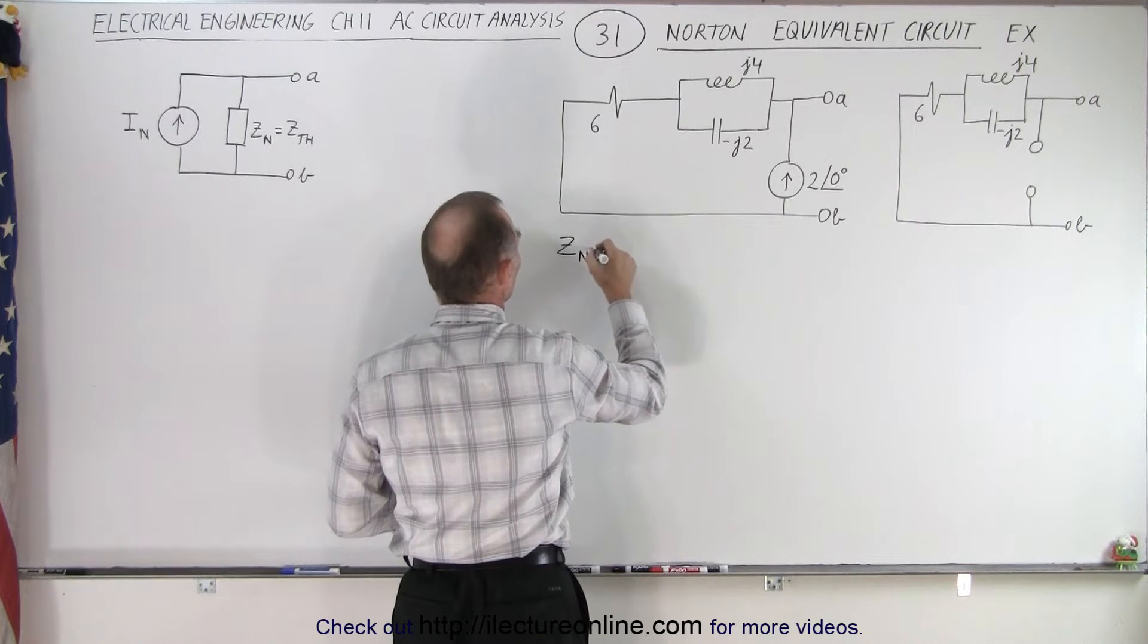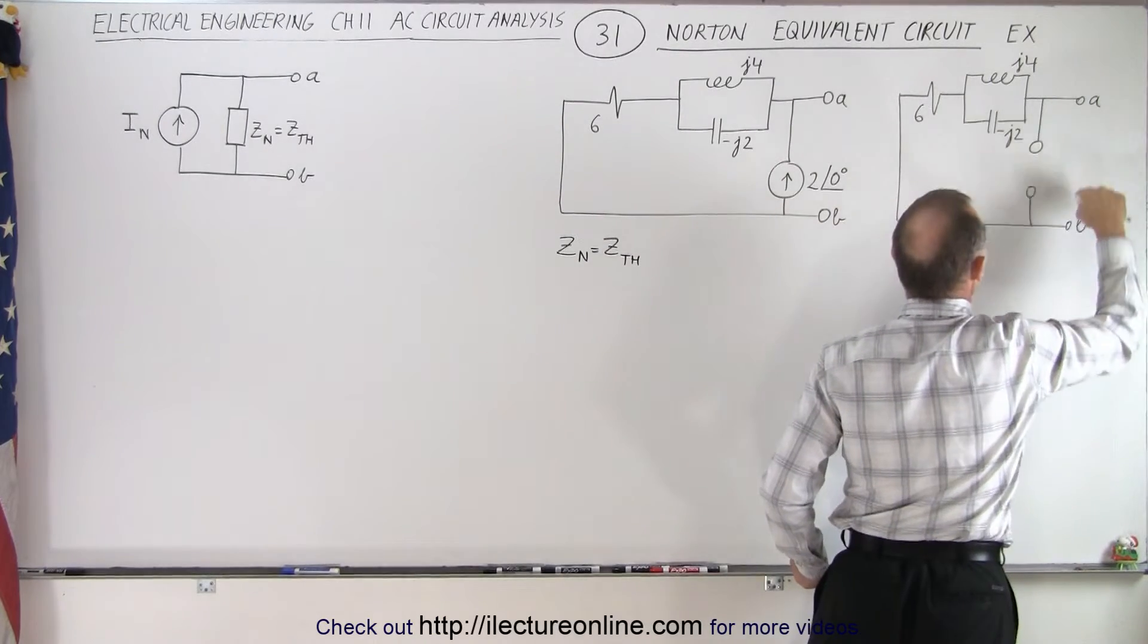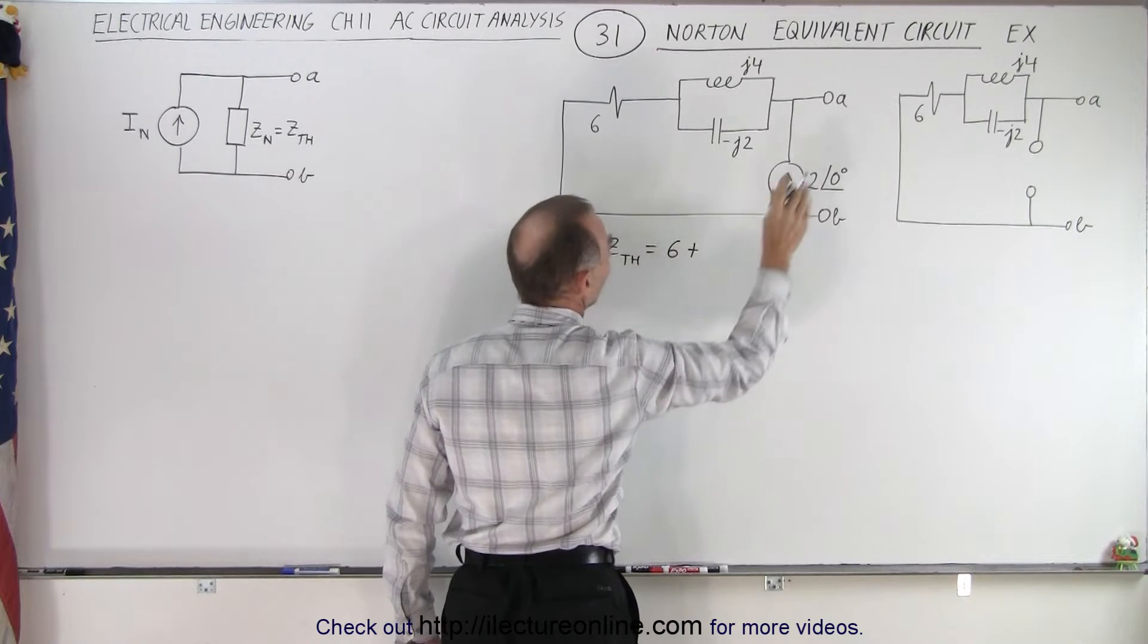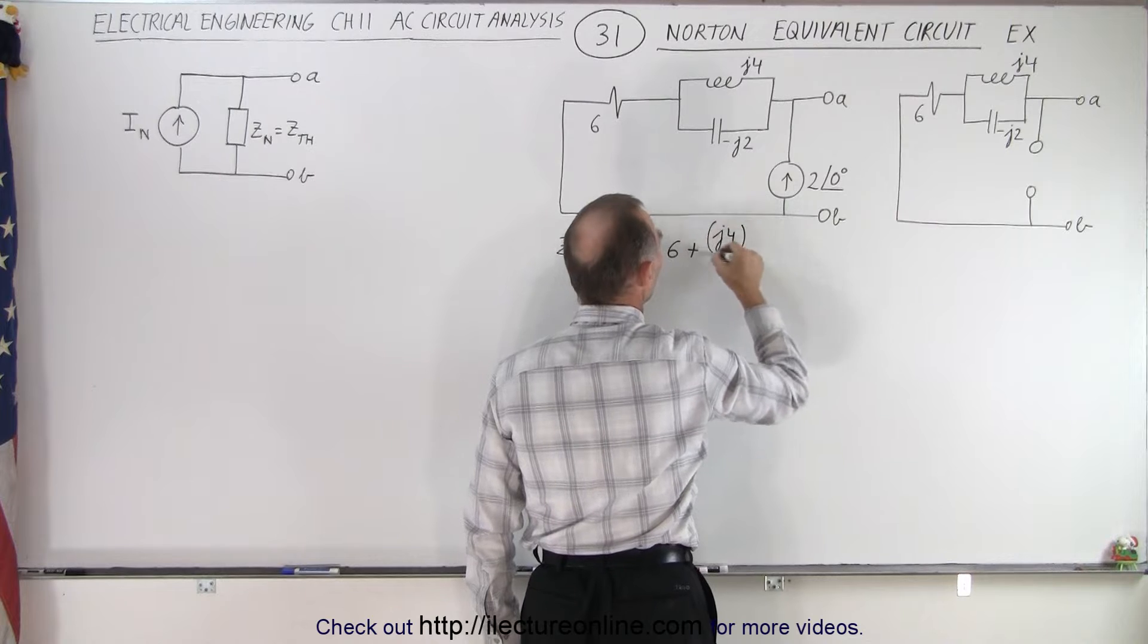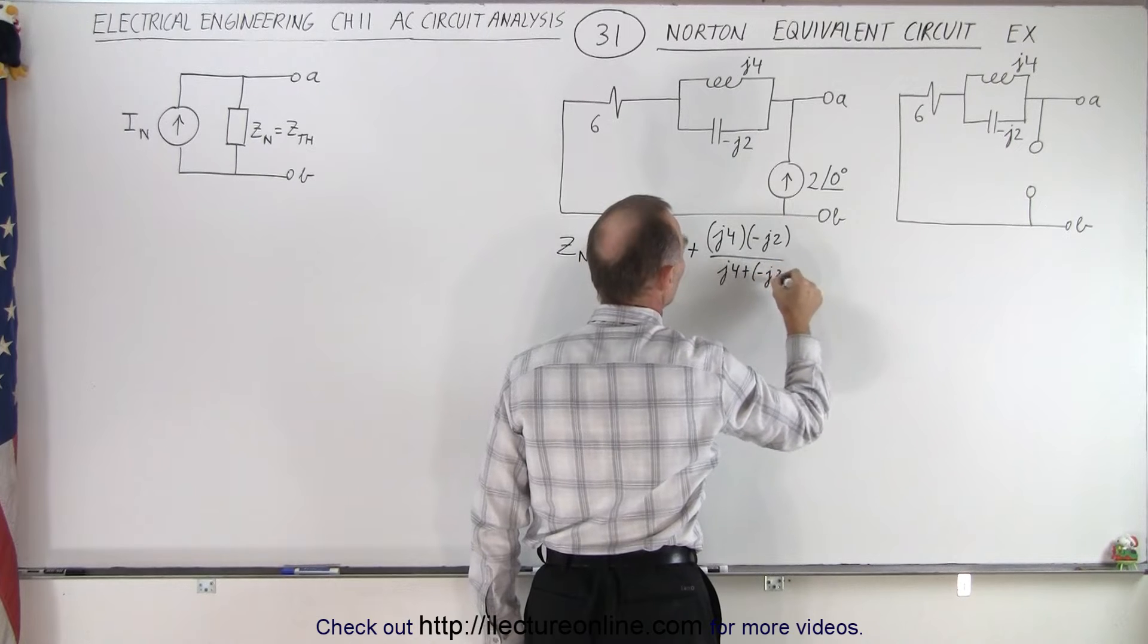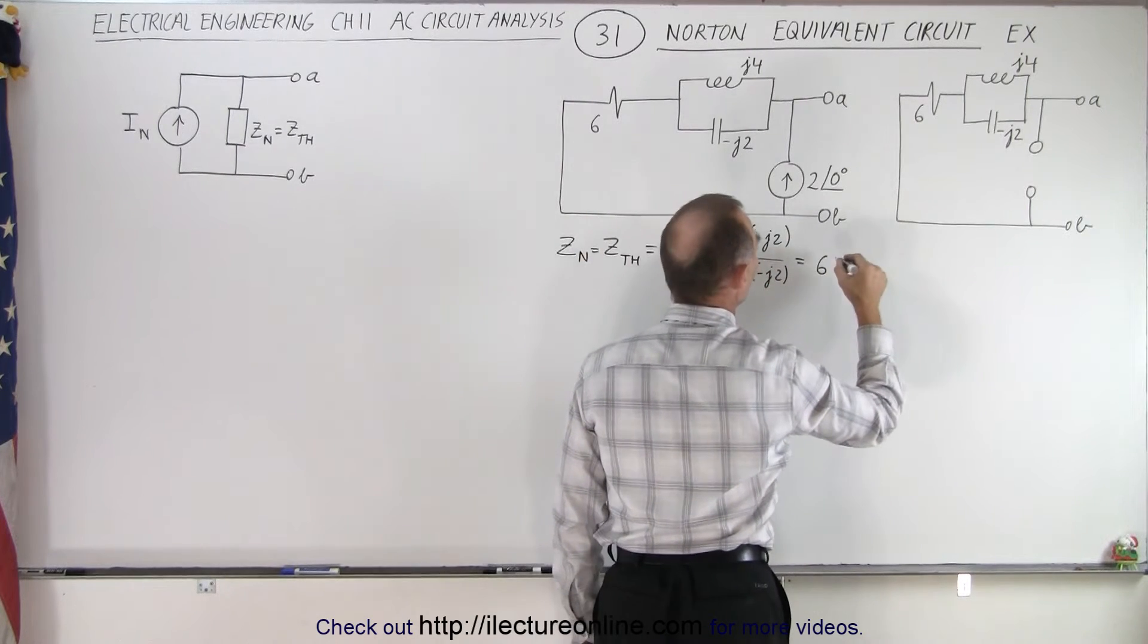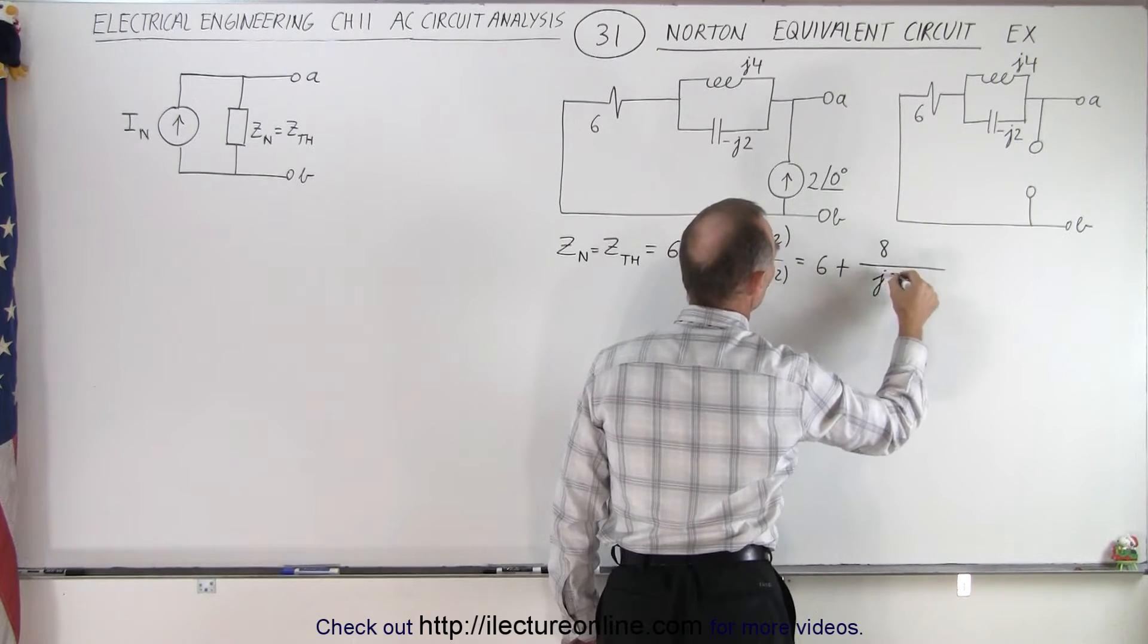So Z_Norton, which is the same as Z_Thevenin, is going to be equal to the impedance as seen from terminals A and B. Notice we have these two in parallel connected to the 6 ohm resistor in series. That will be equal to 6 plus the parallel connection which is the product over the sum. So we have j4 multiplied times minus j2 divided by j4 plus negative j2. So this becomes 6, j times j is negative but times the negative becomes positive.